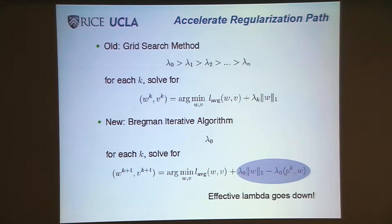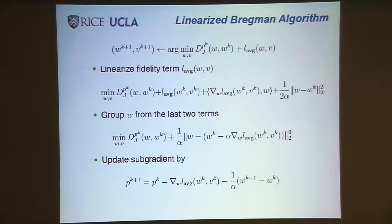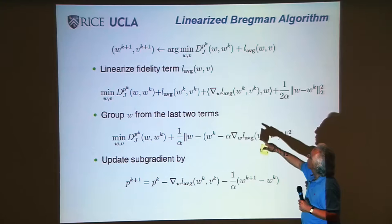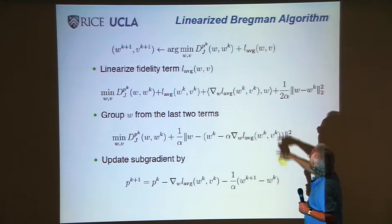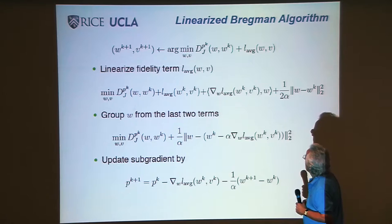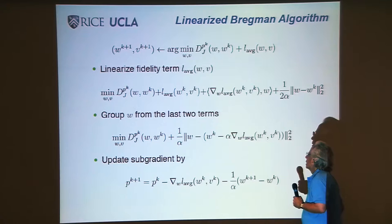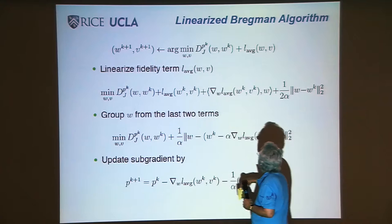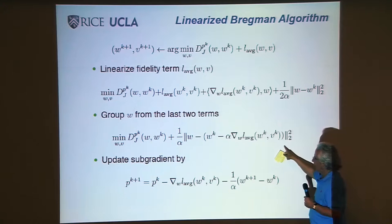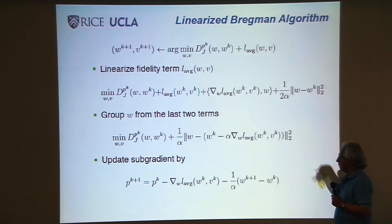Instead of solving this exactly, we do what we call linearized Bregman. We linearize this term, the fidelity term. The value at L average is equal to what it was plus Taylor's theorem, if you add a linear piece in W. You minimize the Bregman distance plus a quadratic term. It's very much like what we did before, except the quadratic term involves a previous iteration of the gradient.